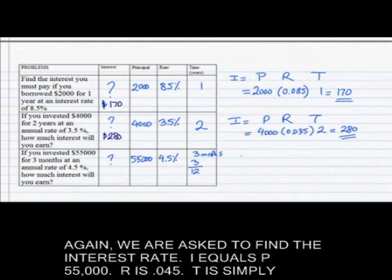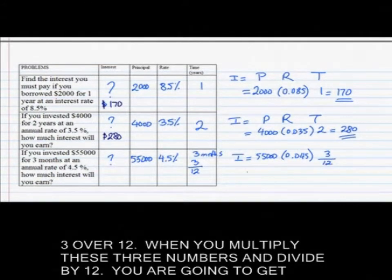You have to understand that you cannot just enter 3 in there. It has to be 3 over 12. So again, we are asked to find the interest. I equals P, 55,000, R is 0.045, T is 3 over 12. When you multiply these three numbers and divide by 12, you're going to get 618.75, which is your answer.